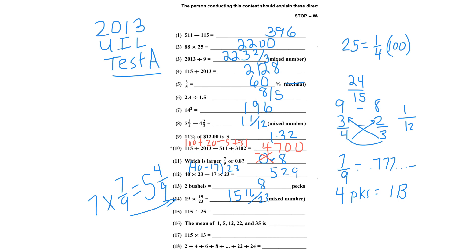Number 15: 115 divided by 25. I multiply numerator and denominator by 4. So 115 times 4 is 460, and 25 times 4 is 100. So 460 divided by 100 is 4.6. I can't write 4.60 — the answer is 4.6.